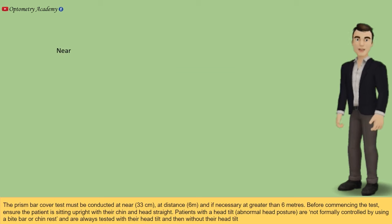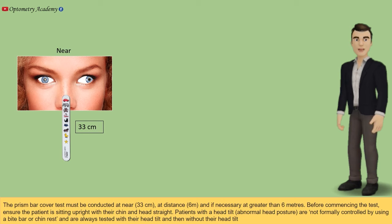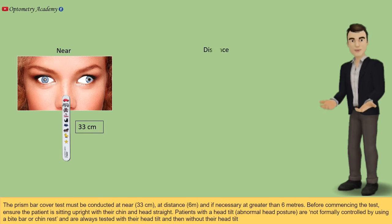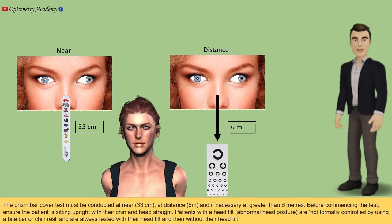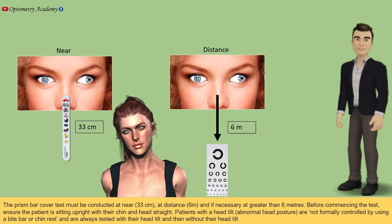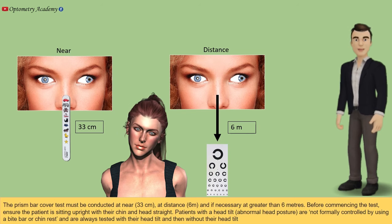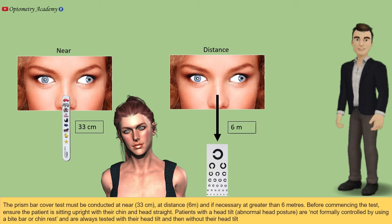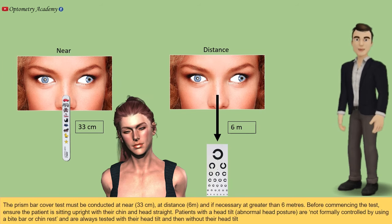The prism bar cover test must be conducted at near, at distance, and if necessary at greater than 6 meters. Before commencing the test, ensure the patient is sitting upright with their chin and head straight. Patients with a head tilt or abnormal head posture are not formally controlled using a bite bar or chin rest, and are always tested with their head tilt and then without their head tilt.